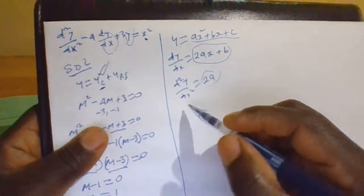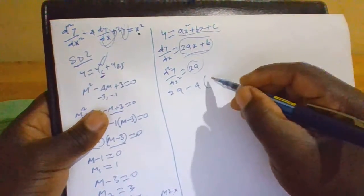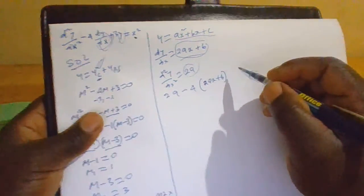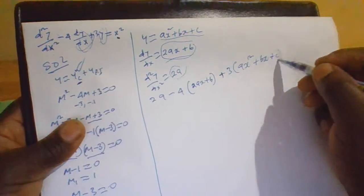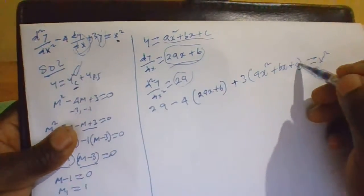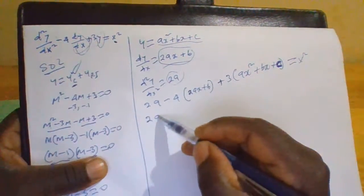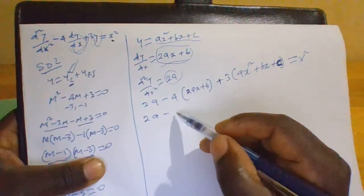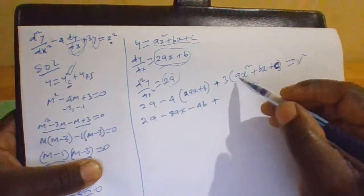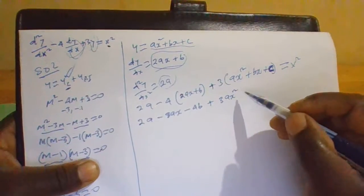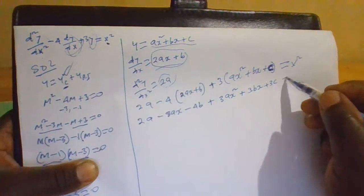After substitution, the equation becomes: 2a minus 4 times (2ax plus b) plus 3 times (ax squared plus bx plus c) equals x squared. Expanding, this gives 3ax squared plus (negative 8a plus 3b)x plus (2a minus 4b plus 3c) equals x squared.